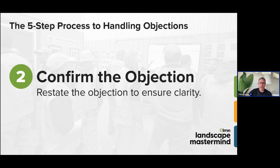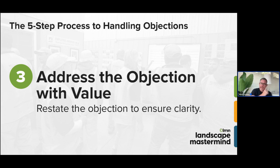When people have a problem they want to solve, they assign a value to that problem depending on how big the problem is to them. For a commercial customer, that's usually fairly easy to calculate — a return on investment for a snow plowing contract. But for someone's backyard with a swimming pool, landscaping, plants, lights, and irrigation, the value is very specific to them based on their house value, income, and access to capital. We have to tie the objection to the problem they need to solve.